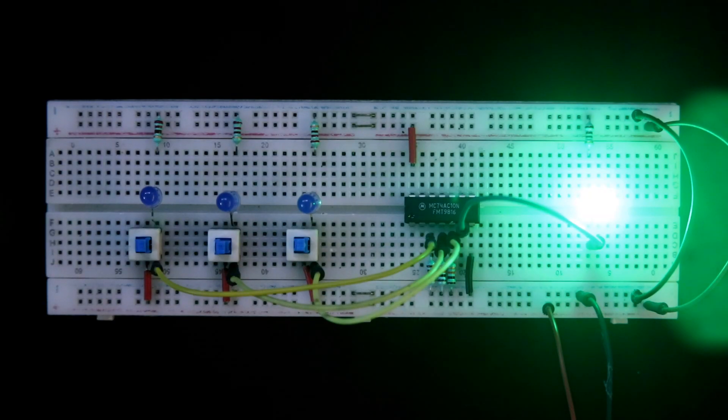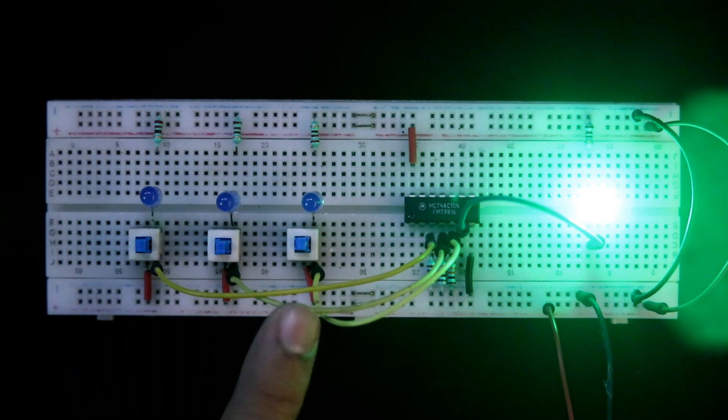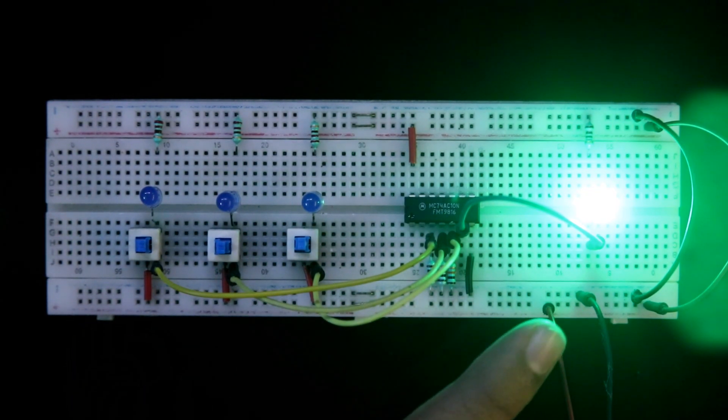Hello guys, in this video we are going to see this NAND gate IC. It is a 3 input NAND gate. Here all 3 inputs are 0, so we are getting 1 in the output.